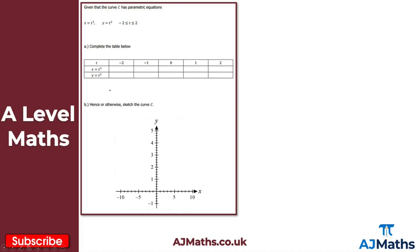This should be straightforward. When t is minus 2, x equals minus 2 cubed, that's minus 8. When t is minus 1, minus 1 cubed gives minus 1. When t is 0, x is 0. When t is 1, 1 cubed gives 1. And finally when t is 2, 2 cubed gives 8.